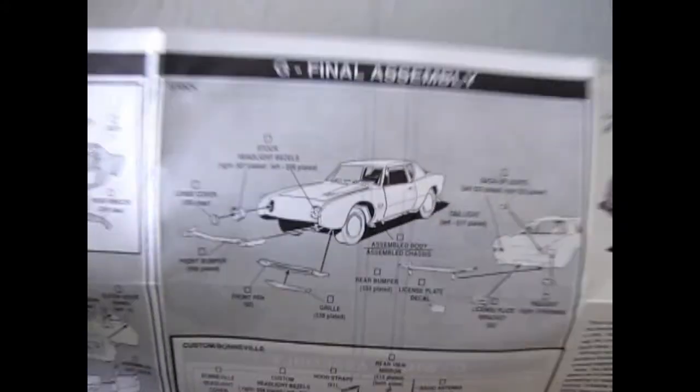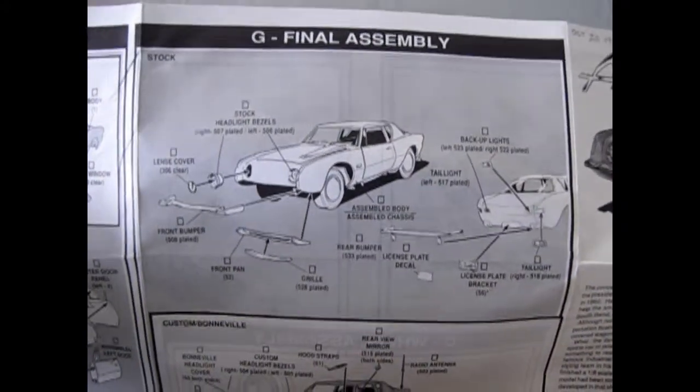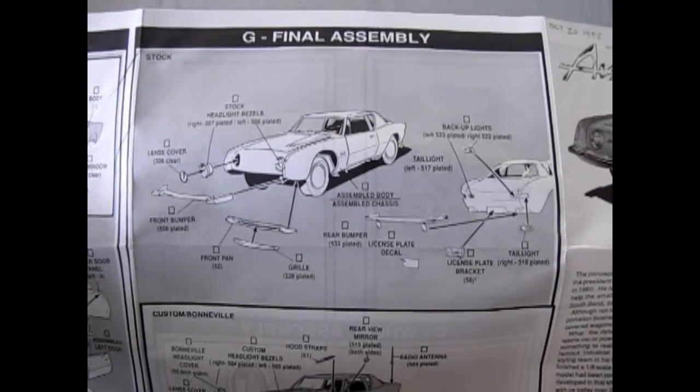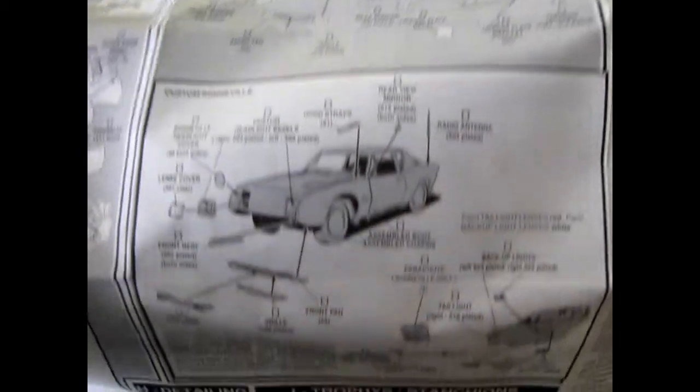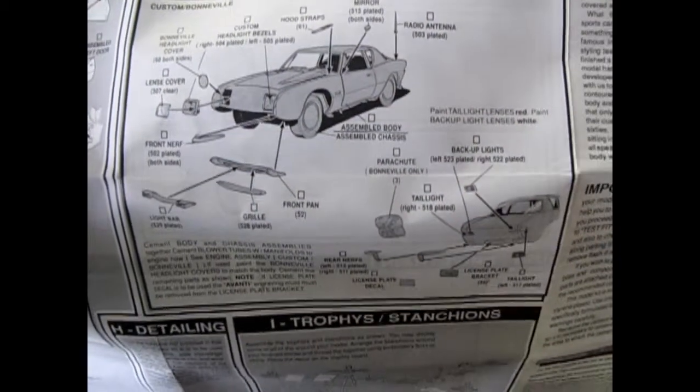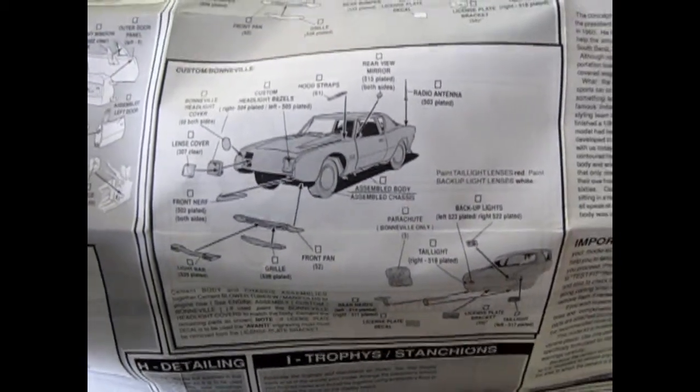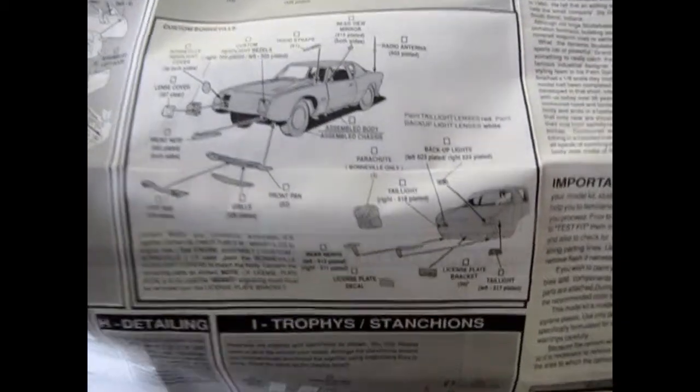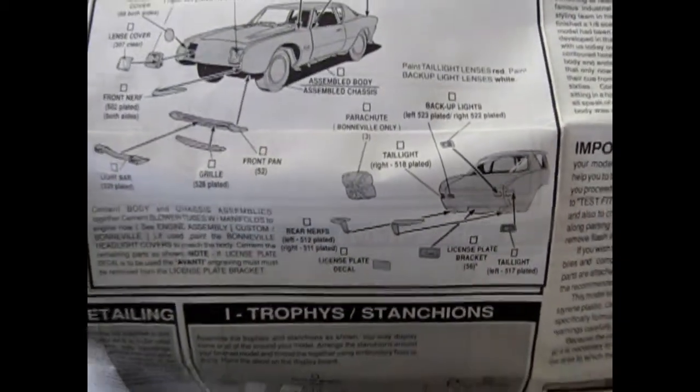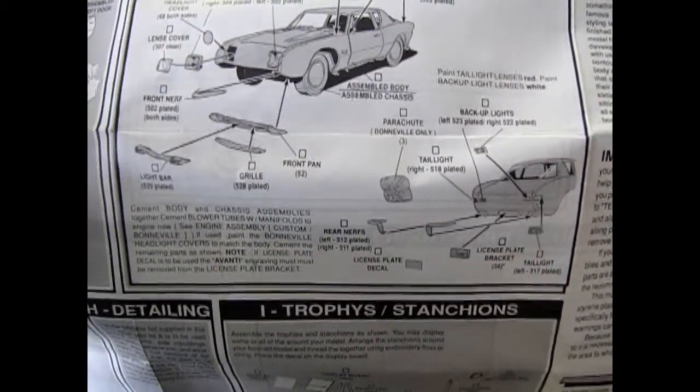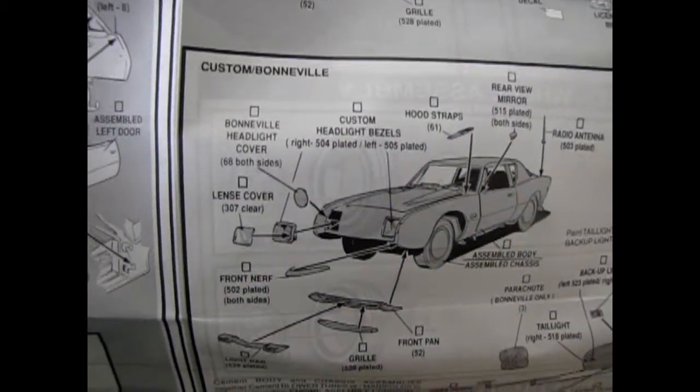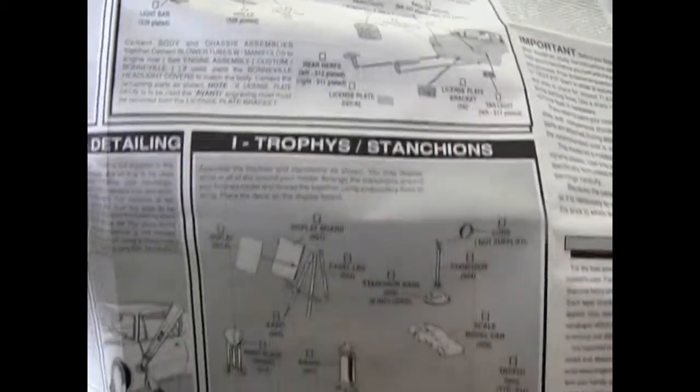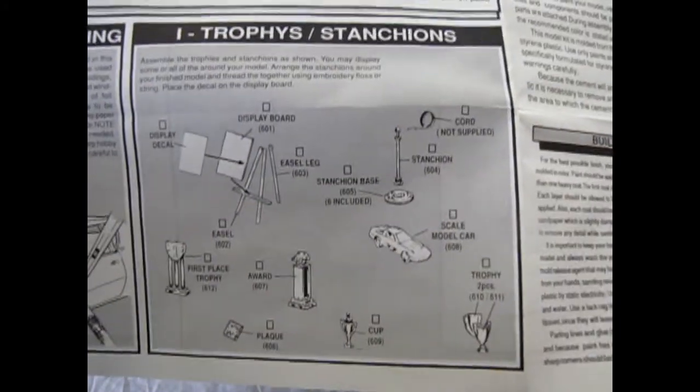Okay, so then we get into our final assembly up here. This is the stock 1963 version with the round headlights, the rear bumper is a backup, all that kind of cool stuff. Then your custom Bonneville with the square lights from about 1964, I do believe. But in this one you get the parachute. Oh, you can also use the headlight covers, circular ones as it shows, to blank that off.